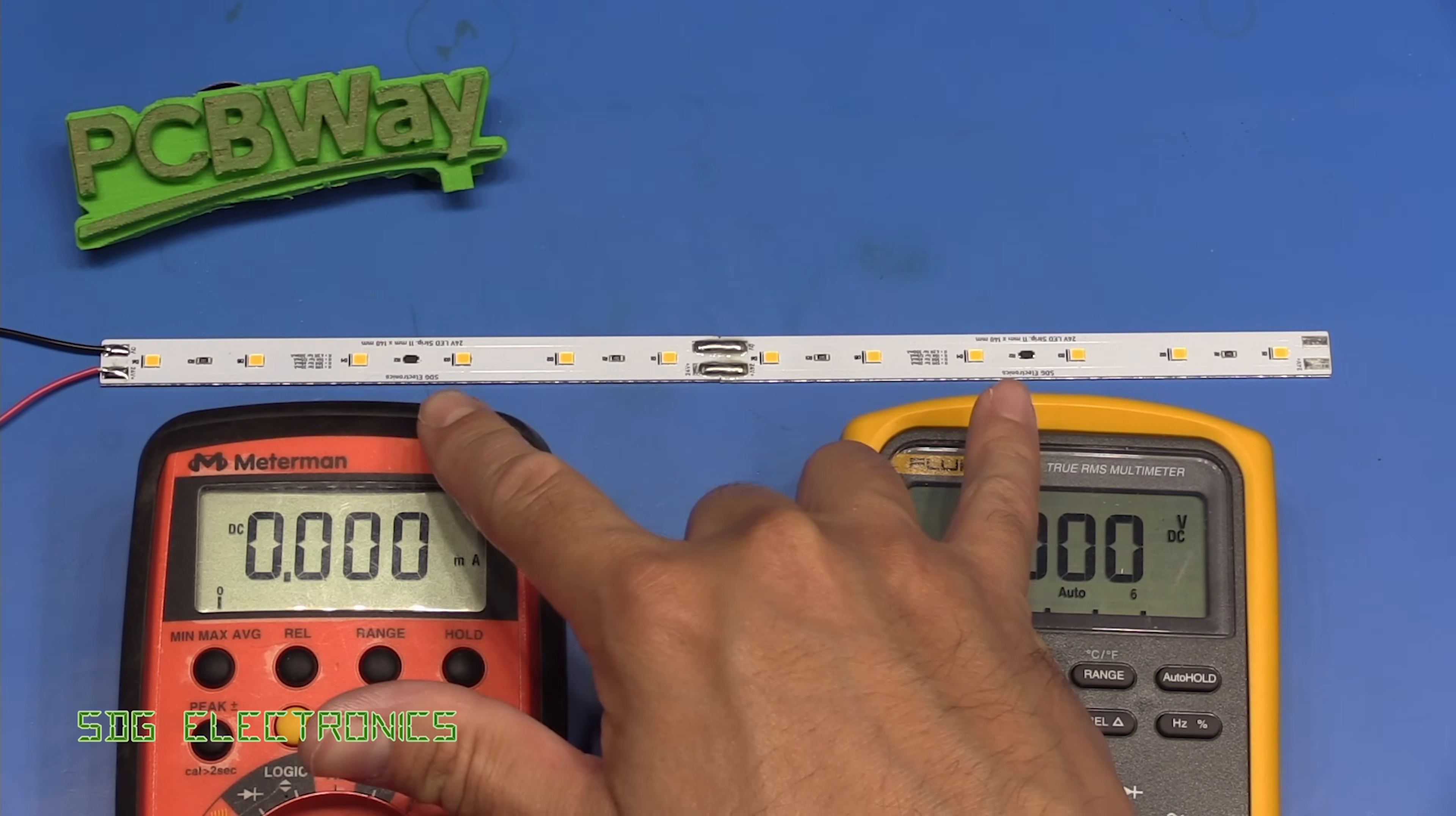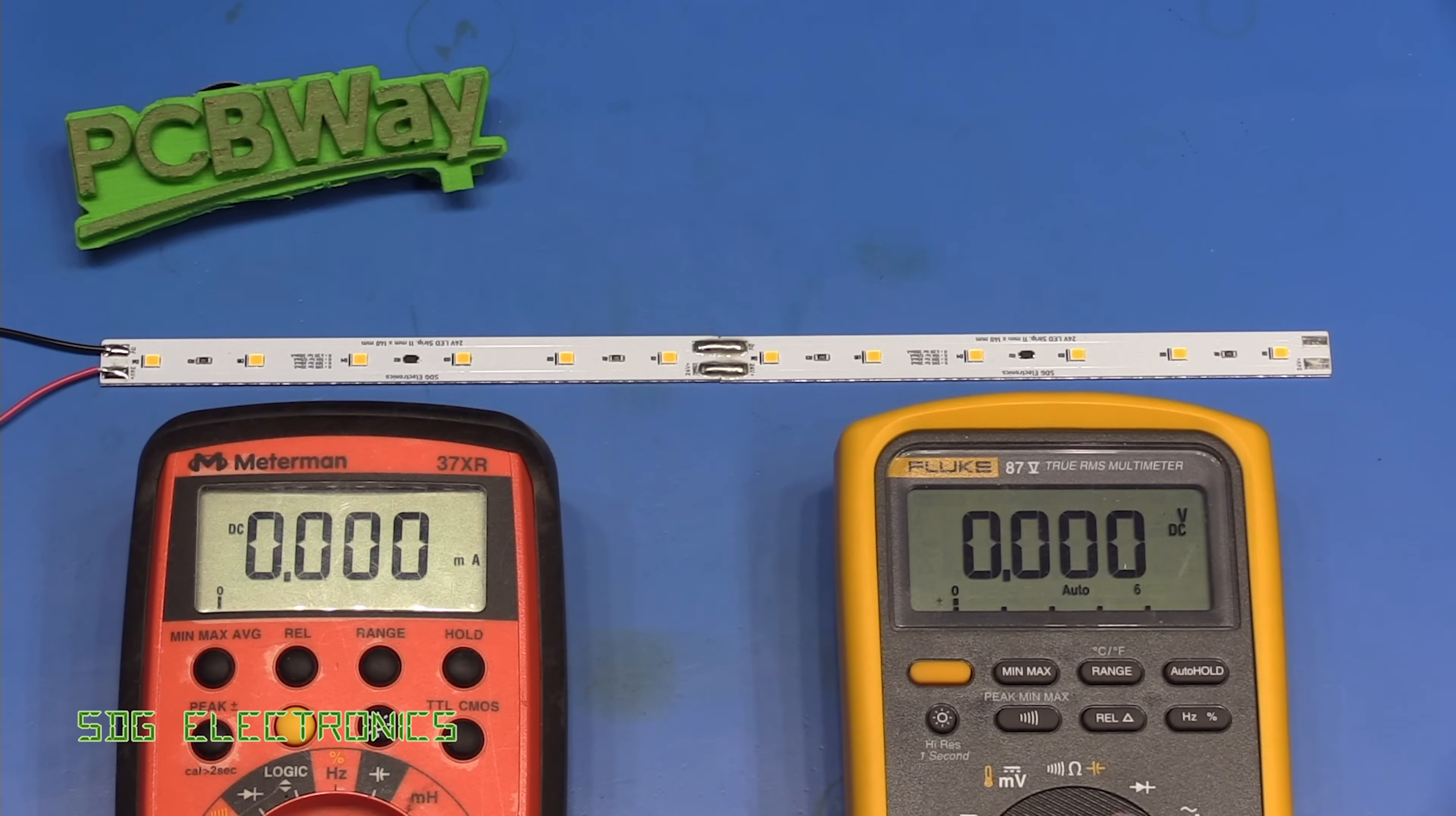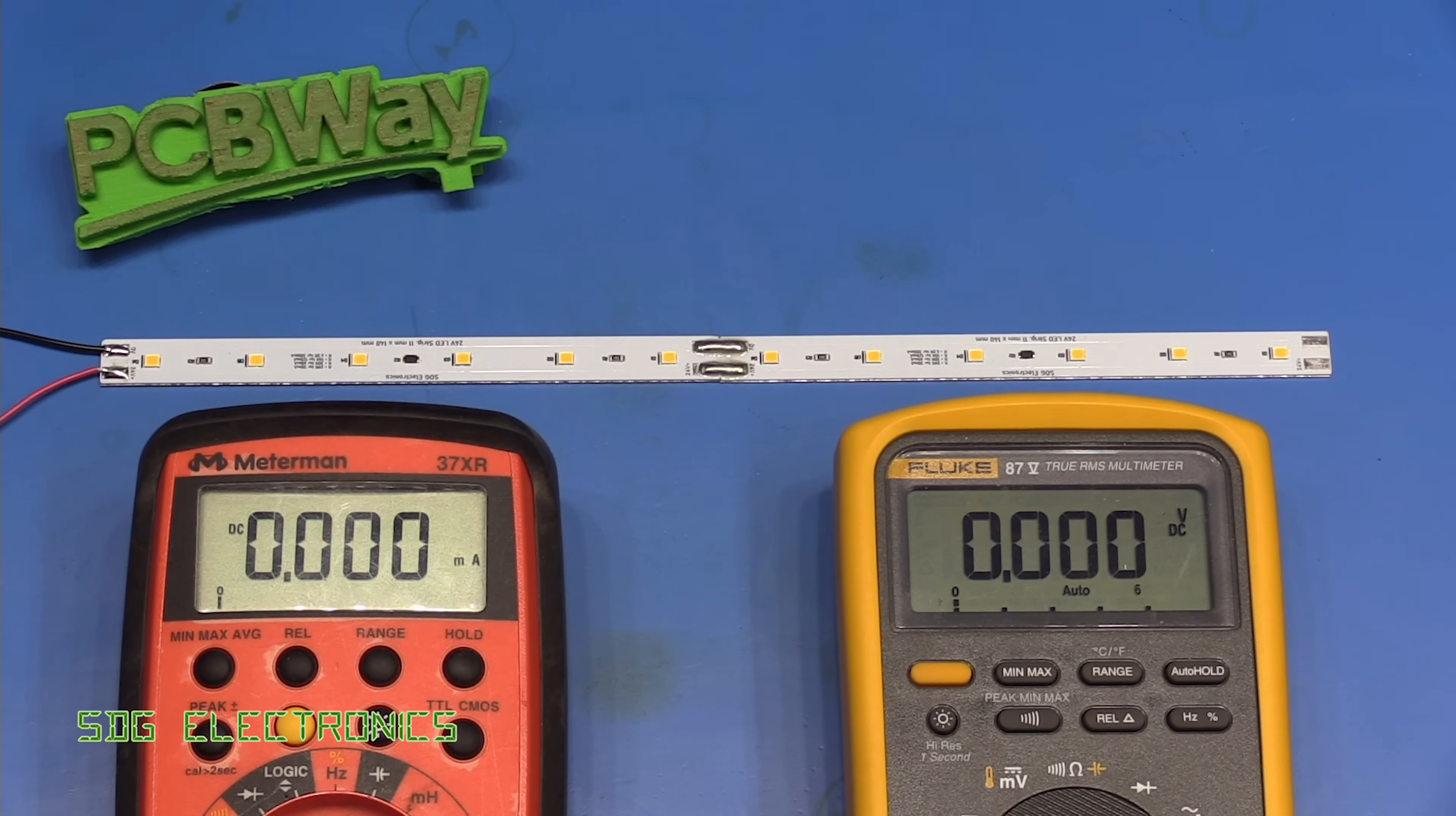So we've got two LED strips here 150 milliamps per strip so 300 milliamps in total. Let's see how it works.